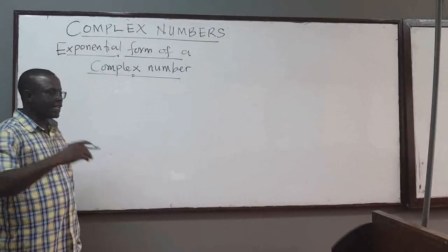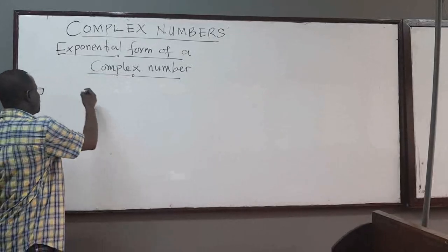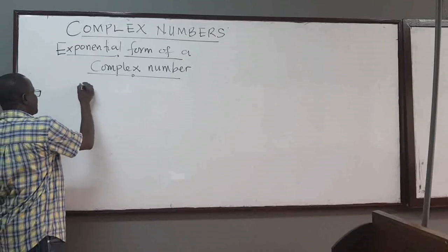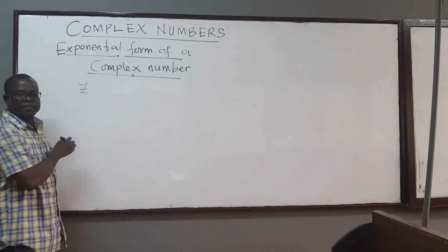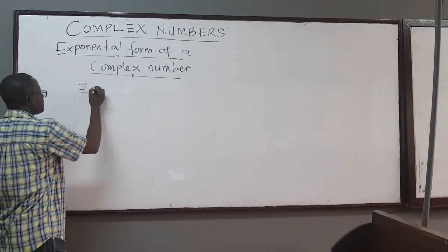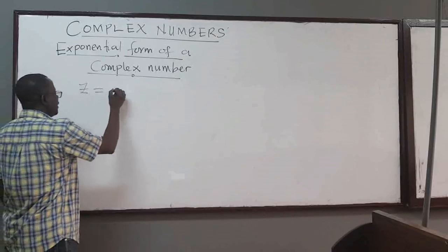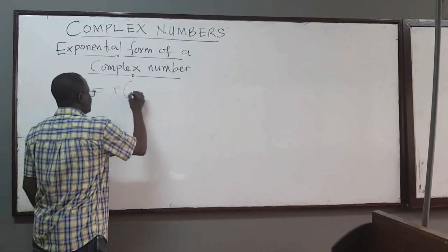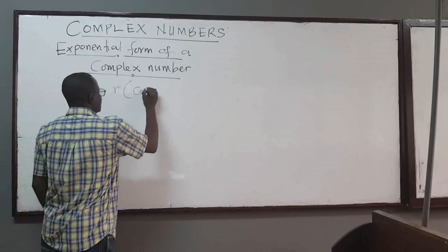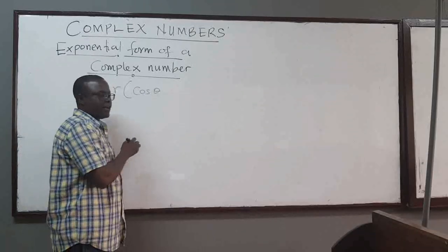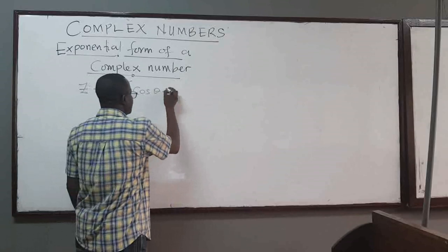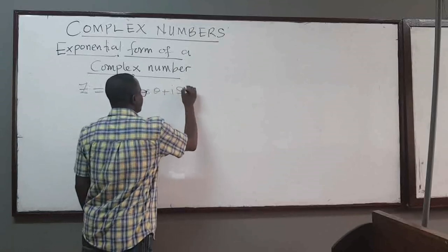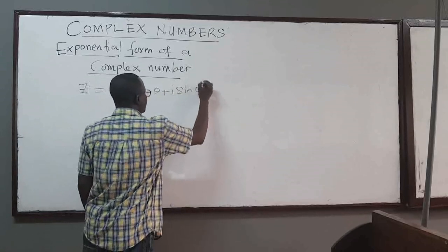In previous lectures, we saw that we can write a complex number z in the form r times cosine of theta plus i sine of theta, where r is the modulus and theta is the argument.